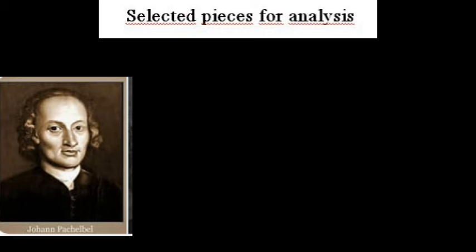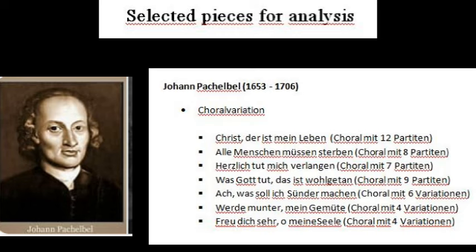The second master I would present to you for analysis is Johan Pachelbel. Chorale variations: Christ, der ist mein Leben - 12 partiten. Alle Menschen müssen sterben - 8 partiten. Herzlich tut mich verlangen - 7 partiten. Was Gott tut, das ist wohlgetan - 9 partiten. And then you have the 6 variations, 4 variations and 4 variations. When you analyzed all of them, then you are well equipped to move forward.